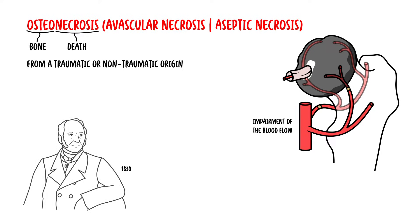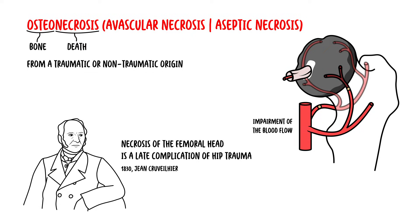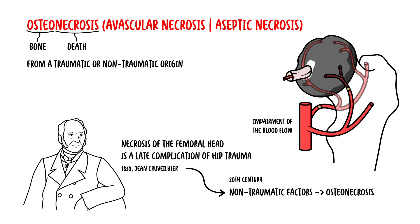Around 1830, Jean Cruville-Hayer, a French anatomist and pathologist, described necrosis of the femoral head as a late complication of hip trauma. He presumed vascular injury from trauma was the only etiology of the necrosis. However, in the early and middle 20th century, various non-traumatic factors were identified to induce the disease, including alcohol and steroid use.